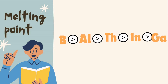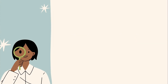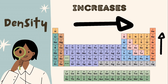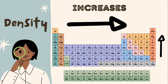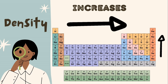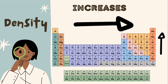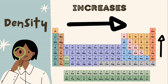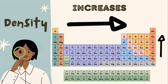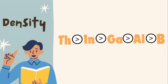The next property is density. It is very similar to the boiling point, and Group 13 follows the periodic table trend. This trend will lead you to the sequence as shown here.